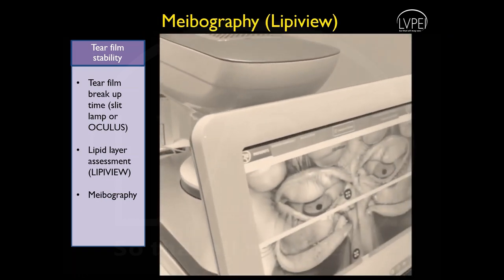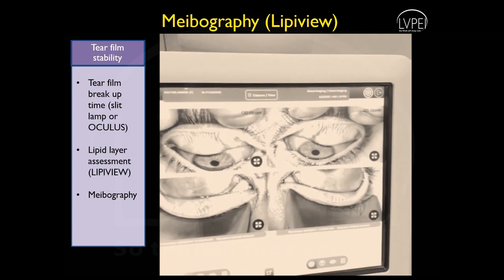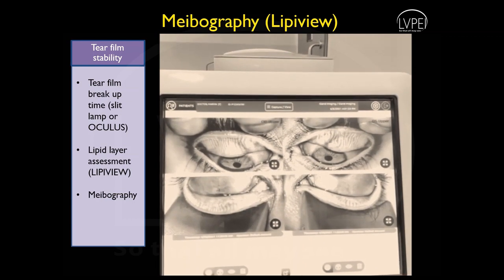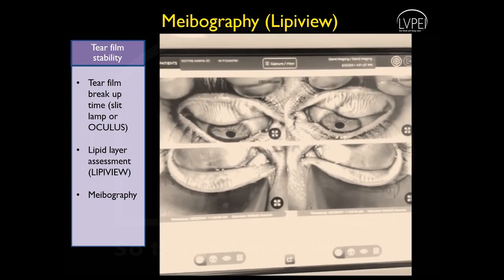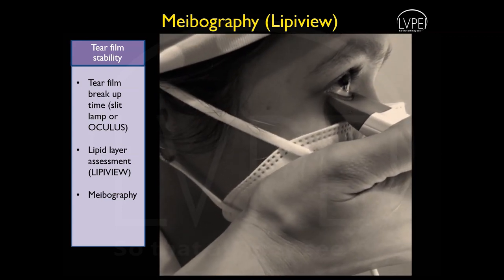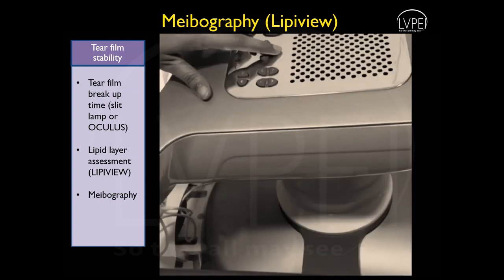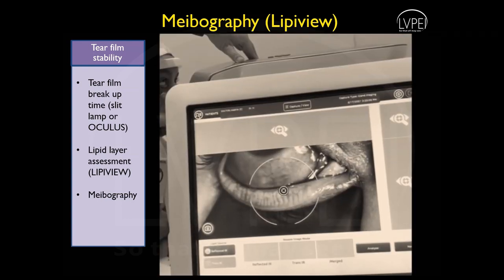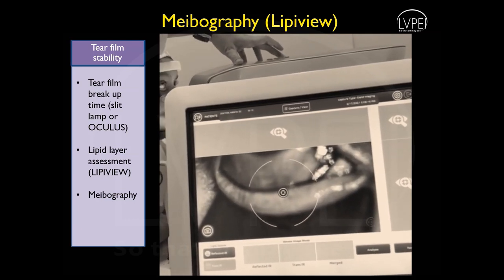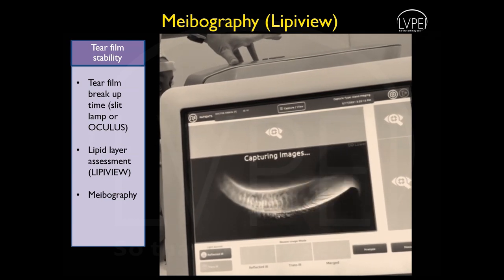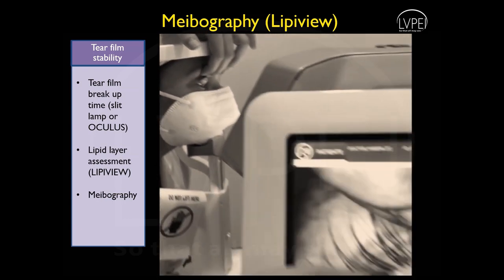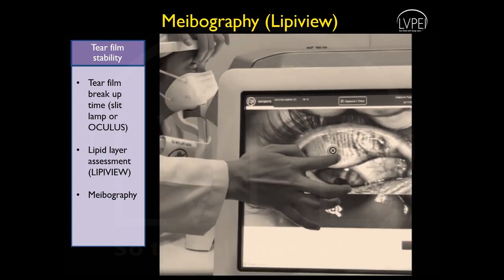Assessment of meibomian gland status is known as meibography, which is also a function available in the LipiView. It distinctly images the meibomian gland structure in high definition. A film of trans-illuminator is applied to the cutaneous side of the everted lid, projecting white light and allowing observation from the palpebral conjunctival surface. Meibomian glands appear as white structures against a dark background.